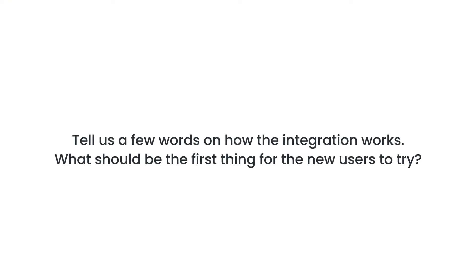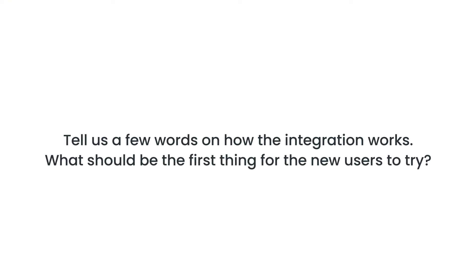Tell us a few words on how the integration works. What should be the first thing for new users to try? The integration is set up in the translation editor of Crowdin. Whenever you are in the environment where you do your work, you will find our checks popping up — there will be warnings for any things that might be problematic. One of the first things that a Crowdin user would benefit from is the spell checking, because this is something that anyone considers to be absolutely necessary.